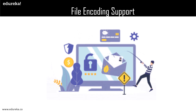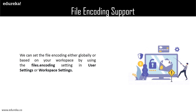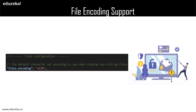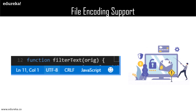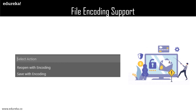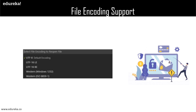What exactly is file encoding? File encoding can be set either globally or based on your workspace using the file.encoding setting in your user settings or workspace settings. The file encoding support in Visual Studio will look something like this — you can view the file encoding in the status bar highlighted in blue. Click on the encoding bar in the status bar to reopen or save the active file with a different encoding. You can then choose your type of encoding; here we have chosen UTF-8, which is the default encoding in Visual Studio.